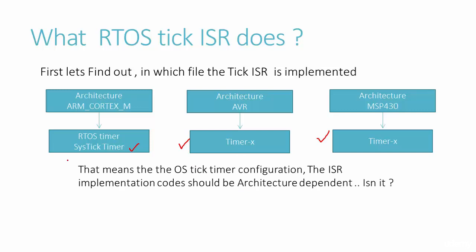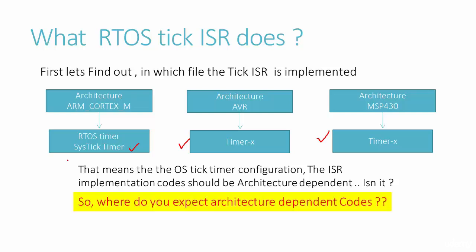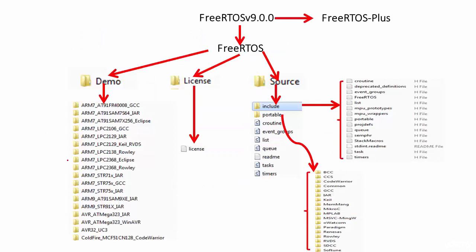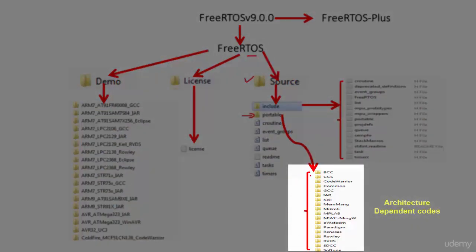The OS tick timer configuration and ISR implementation code are architecture-dependent. They depend on the architecture on which you're going to run the FreeRTOS kernel. In the FreeRTOS folder structure, there is a folder called 'portable' under the FreeRTOS source directory, and inside it you have all the architecture-dependent codes.